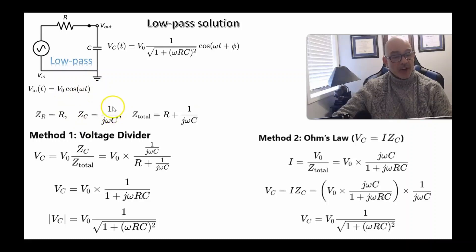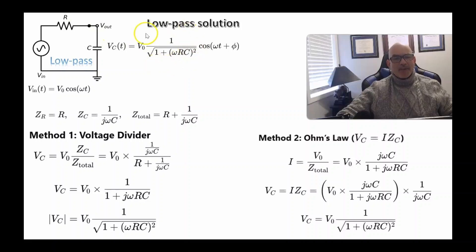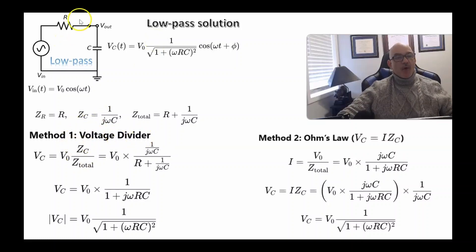The impedance of the capacitor goes as 1 over omega·C. So if omega is very large, the impedance of the capacitor is tiny. The total impedance of the circuit is equal to the impedance of the resistor plus the impedance of the capacitor. Now I want to calculate the amplitude of the voltage across the capacitor using two different methods. Method one is the voltage divider method. The voltage across the resistor plus the voltage across the capacitor must sum to the voltage of the power supply — this is conservation of energy.